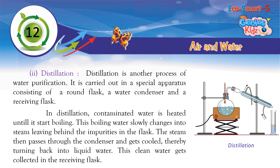Distillation is another process of water purification. It is carried out in a special apparatus consisting of a round flask, a water condenser, and a receiving flask. Contaminated water is heated until it starts boiling. This boiling water slowly changes into steam, leaving behind the impurities in the flask. The steam then passes through the condenser and gets cooled, thereby turning back into liquid water. This clean water gets collected in the receiving flask.